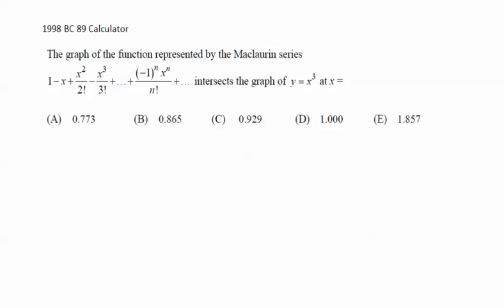1998, BC89. We have the graph of the function represented by the Maclaurin series 1 minus x plus x squared over 2 factorial, etc., intersects the graph of y equals x cubed at x equals what? This is an example of how you have to be able to look at a series and tell what function that series represents.